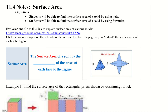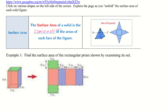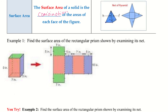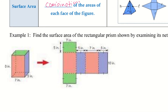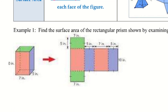The surface area of a solid is the combination of the areas of each face of the figure. If we take a look at the net of a pyramid, we have the square on the bottom and then four triangles — so if we add the four triangles together and then the base, we get the surface area. In example 1, we want to find the surface area of the rectangular prism shown by examining its net. We have our rectangular prism all put together, and then it's taken apart into this net shape. It is color coded for us, which is nice.